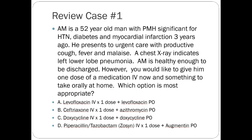We have a 52-year-old man with a past medical history significant for hypertension, diabetes, and MI three years ago. He presents to urgent care with productive cough, fever, and malaise. Chest x-ray indicates left lower lobe pneumonia. He's healthy enough to be discharged. Say you'd like to give him one dose of a medication IV now and something to take orally at home.